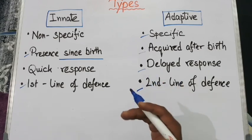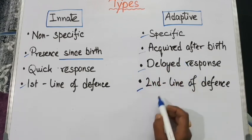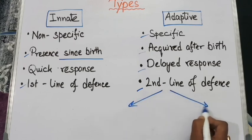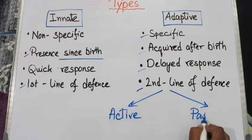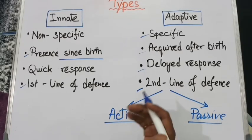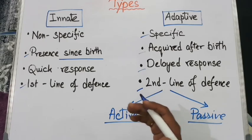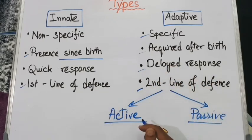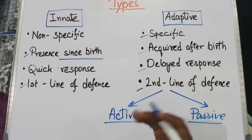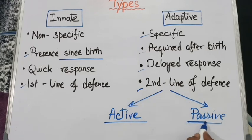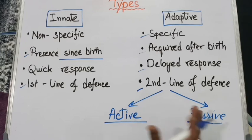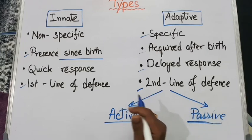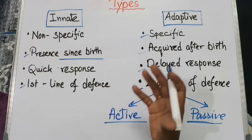Based on the type of exposure, the adaptive immune system can be divided further into two types: active immunity and passive immunity. Active immunity can be developed by direct exposure to pathogens or through vaccination. Passive immunity can be developed by supplying ready-made antibodies into the body. Now let's know about the different components of the innate and adaptive immune system.